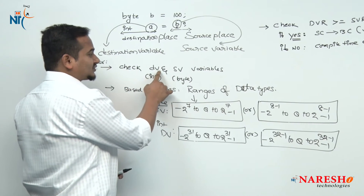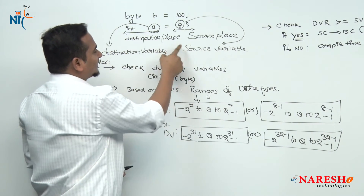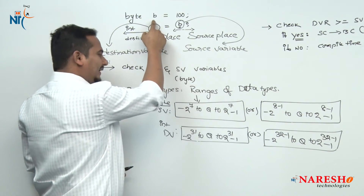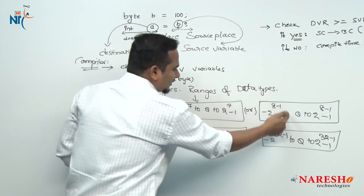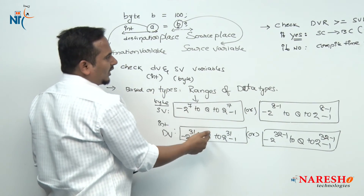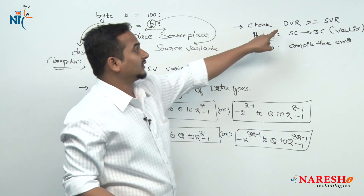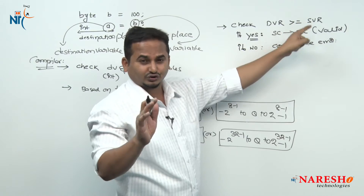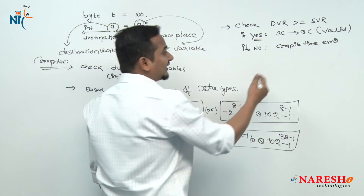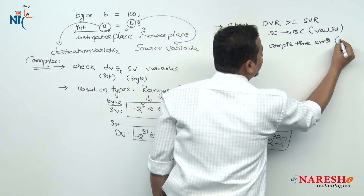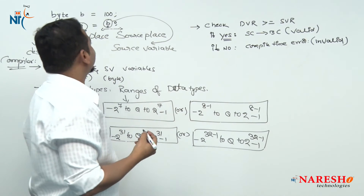The first step: it checks destination and source variable types — here int and byte. Based on the data types, the compiler checks the ranges. In the third step, it checks whether destination variable range is greater than or equal to source variable range. If yes, the statement is valid; otherwise the statement is invalid — it gives an error.